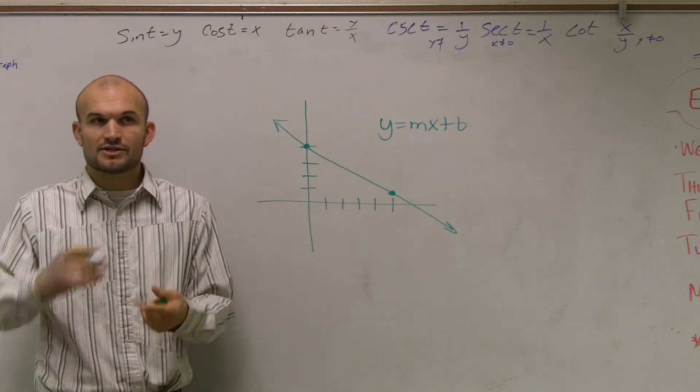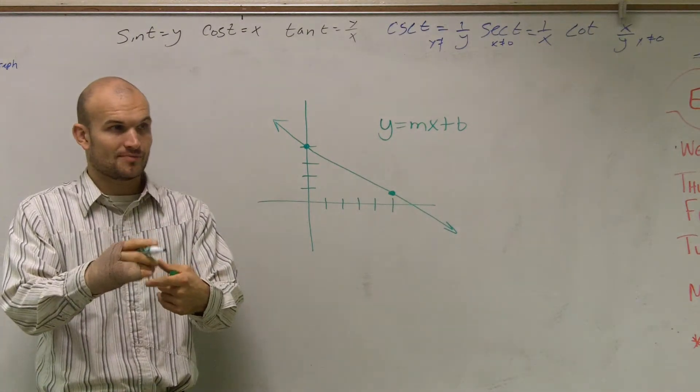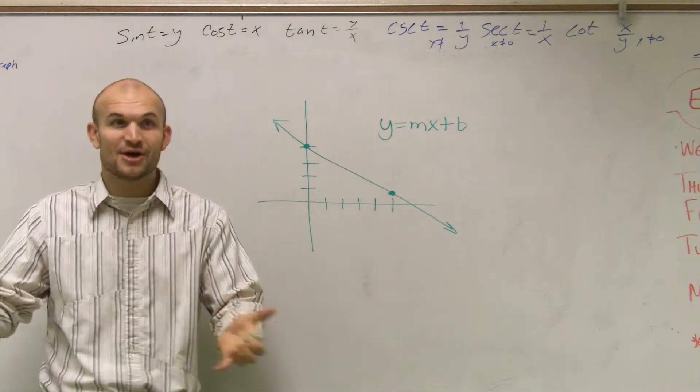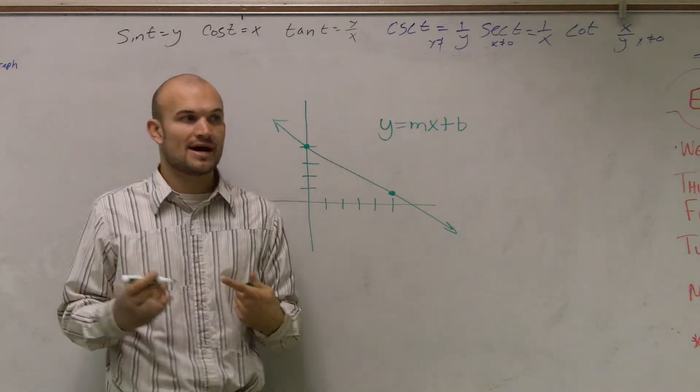It's called slope-intercept form because you need to find a slope, right? Rhymes with hope, down on a rope. You need to find your slope. And then also you need to find the y-intercept, where the graph crosses the y-axis.